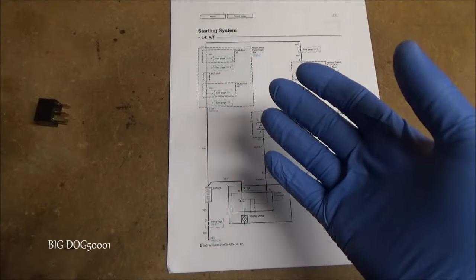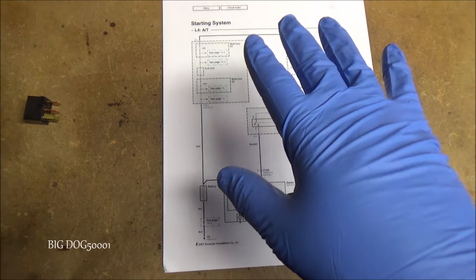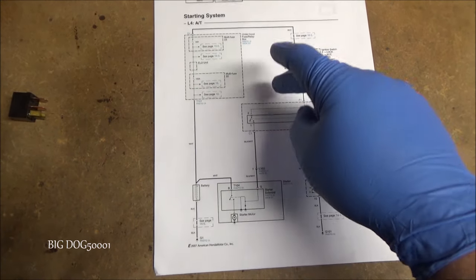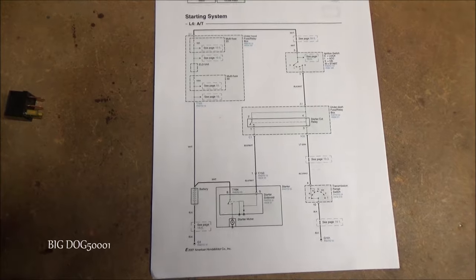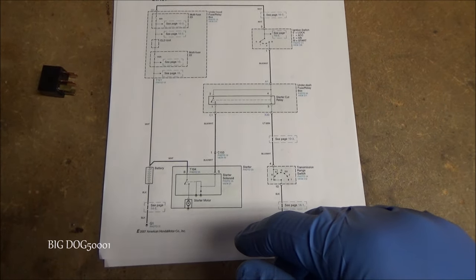Now, starter circuits can be fairly complicated, so in order to keep it a little simpler for this video, our demonstration car will be a 2007 Accord, and I have a wiring diagram for that vehicle.